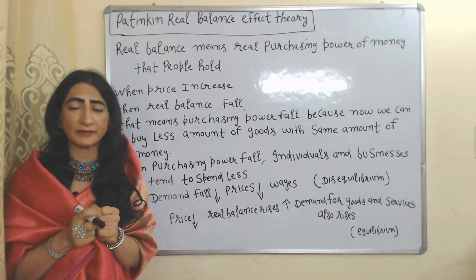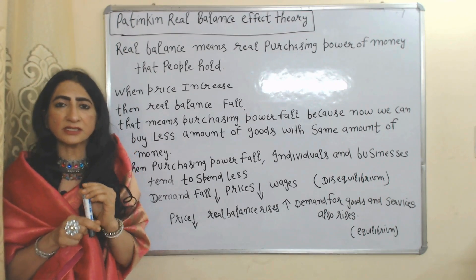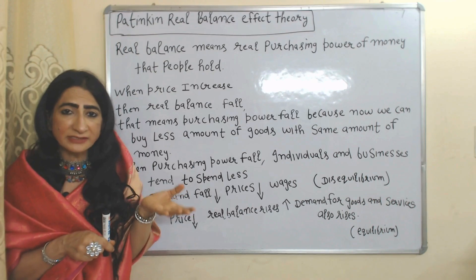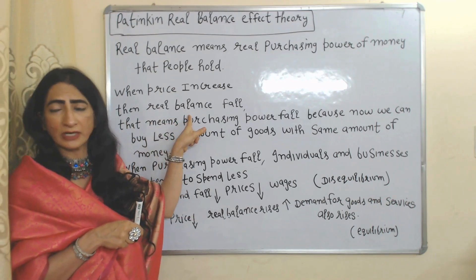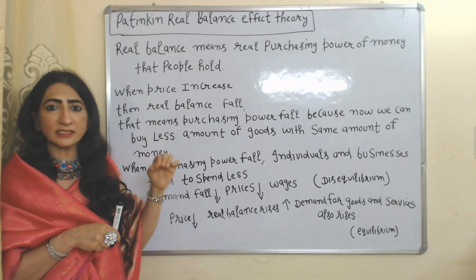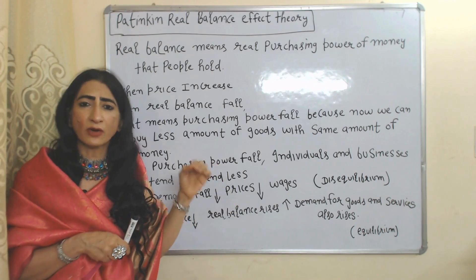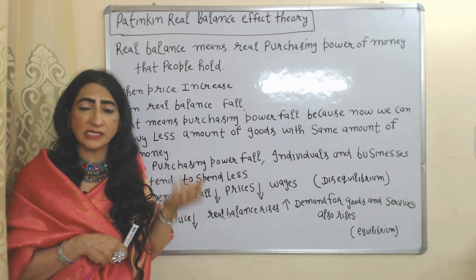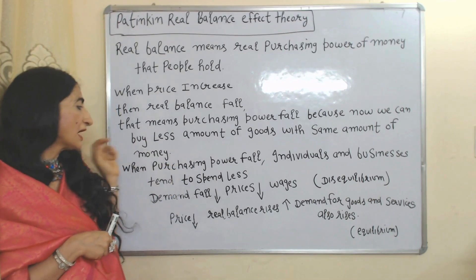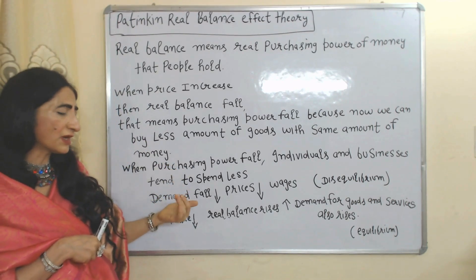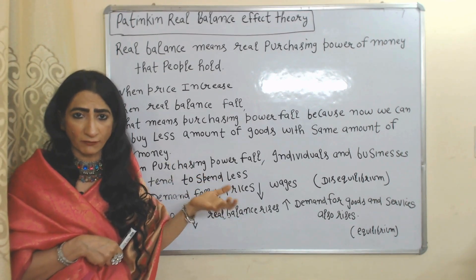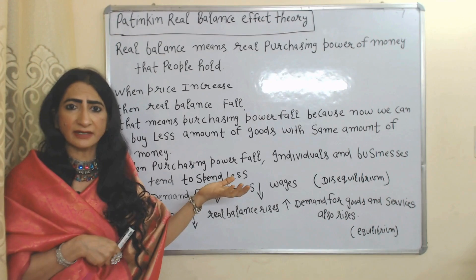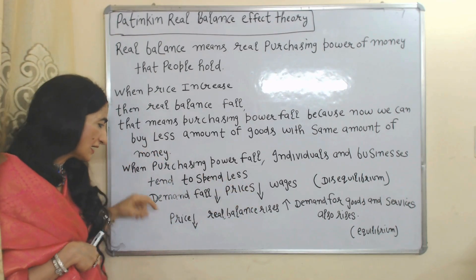Real balance means the real purchasing power of money that people hold. As prices increase, the real balance falls — that means as prices increase, purchasing power falls, because now people can buy less amount of goods and services with the same amount of money. As purchasing power falls, individuals and businesses spend less money.